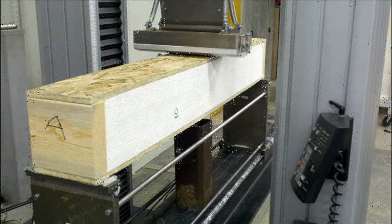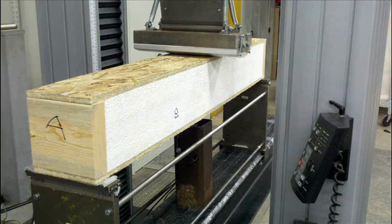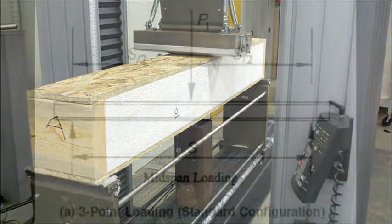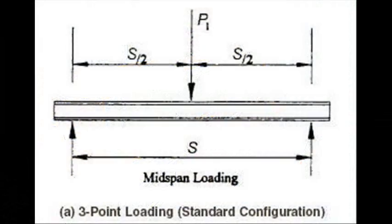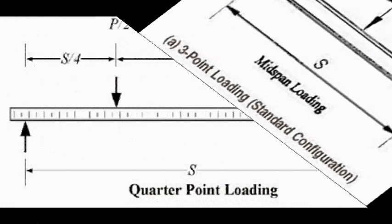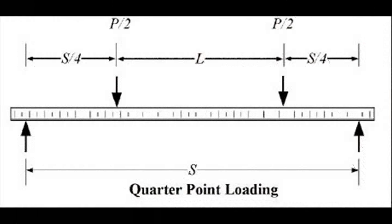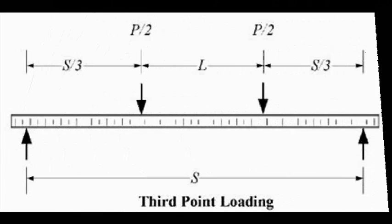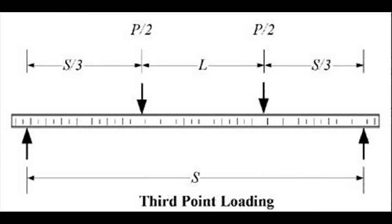Multiple loading configurations are permissible by ASTM C393, with the standard configuration being two beam supports and a single loading point mid-span between the two supports. Any other configuration is considered to be non-standard.